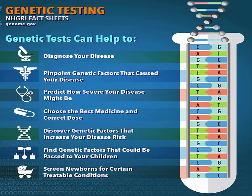A positive test could confirm a diagnosis of Huntington's disease, indicate that a person is a carrier of a genetic mutation like cystic fibrosis, or identify an increased risk for developing breast cancer. It may suggest a need for further testing, but a positive test cannot establish absolute risk or predict the exact nature of a condition. A negative test result means the laboratory did not find an altered form of the gene, chromosome, or protein being reviewed, indicating the person is not affected by that disorder, is not a carrier, and doesn't have an increased risk of developing a certain disease.